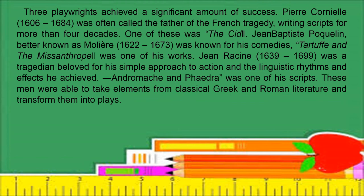Tartuffe and The Misanthrope were among Molière's works. Jean Racine, 1639 to 1699, was a tragedian beloved for his simple approach to action and the linguistic rhythms and effects he achieved. Andromaque and Phaedra were among his scripts. These playwrights were able to take elements from classical Greek and Roman literature and transform them into plays.